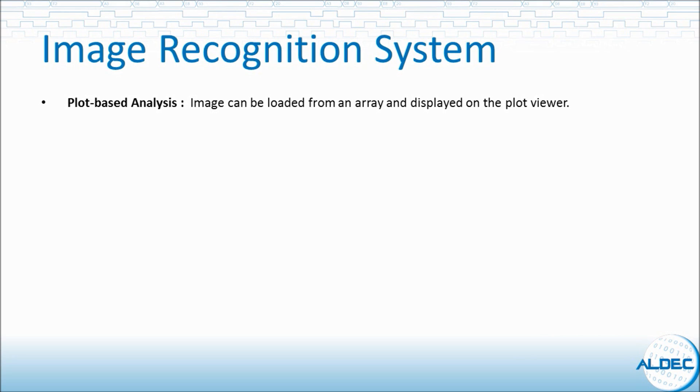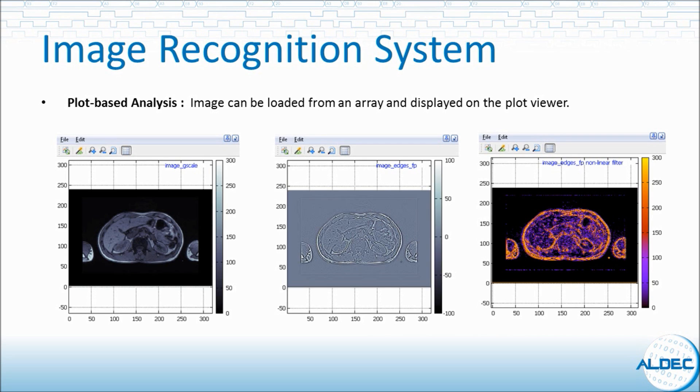In plot based analysis, the image could be based on one or a two dimensional array. If a one dimensional array is used, it must store image data line by line. Images from different stages of processing are shown here.